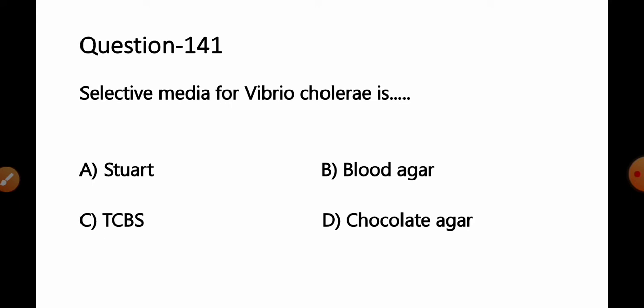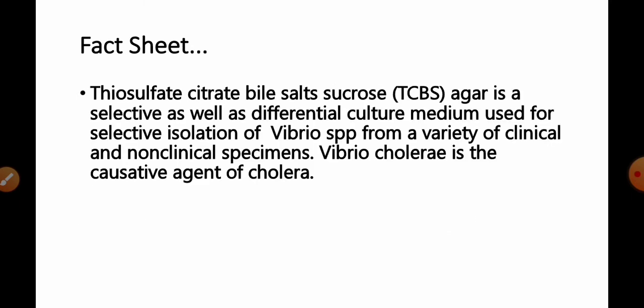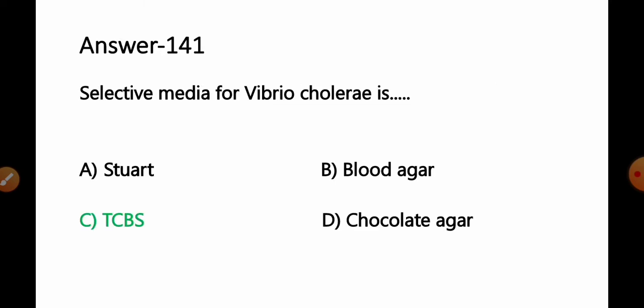Question 141: Selective media for Vibrio cholerae is: option A Steward's agar, B blood agar, C TCBS agar, D chocolate agar. Thiosulfate citrate bile salt sucrose agar — TCBS agar — is a selective and differential culture medium used for the selective isolation of Vibrio species from a variety of clinical and non-clinical specimens. Vibrio cholerae is the causative agent of cholera. Option C TCBS agar is the correct answer.